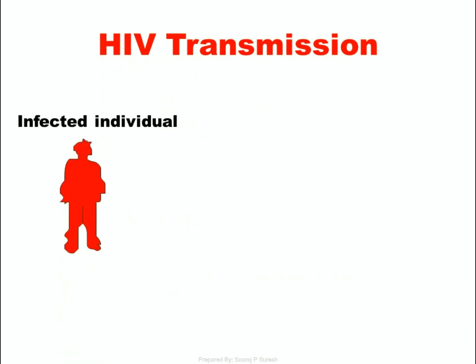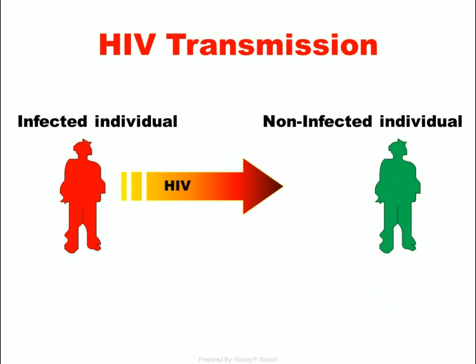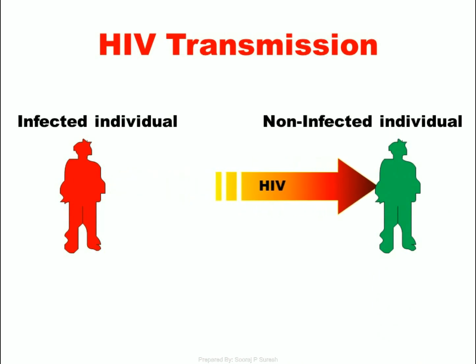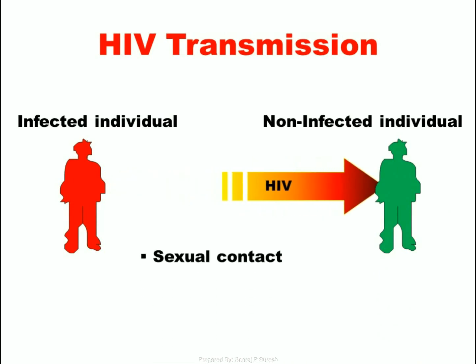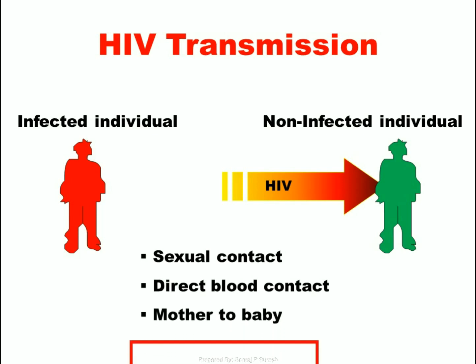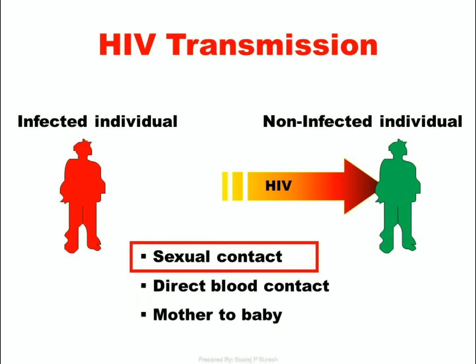Routes of transmission of HIV: HIV is transmitted from an HIV-infected person to a non-infected person through sexual contact, direct blood contact, and mother to baby.